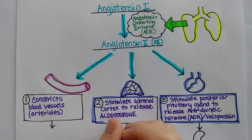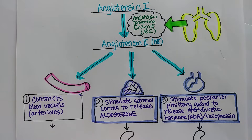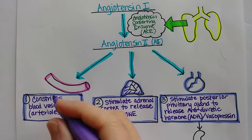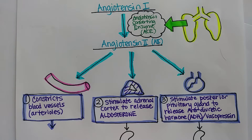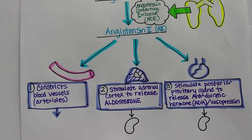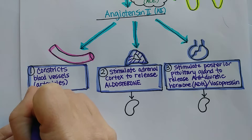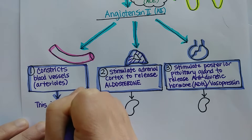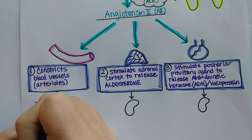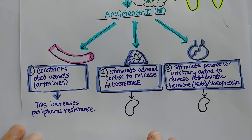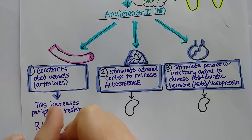Those are the three effects of angiotensin 2, and they all are going to raise blood pressure. When you constrict arterioles, you will increase peripheral resistance, and that raises blood pressure — because the blood has more resistance to flow.